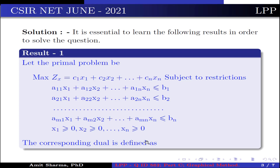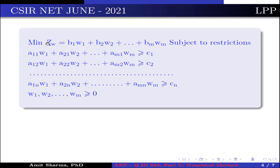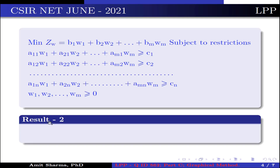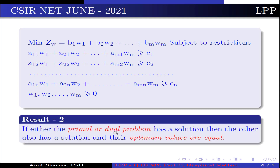Using this fact, the corresponding dual is defined as: minimize z(w) = b1w1 + b2w2 + ... + bmwm, subjected to restrictions a11w1 + a21w2 + ... + am1wm ≥ c1, a12w1 + a22w2 + ... + am2wm ≥ c2, where w1, w2, ..., wm ≥ 0. Result number 2: if either the primal or dual problem has a solution, then the other also has a solution and their optimum values are equal.